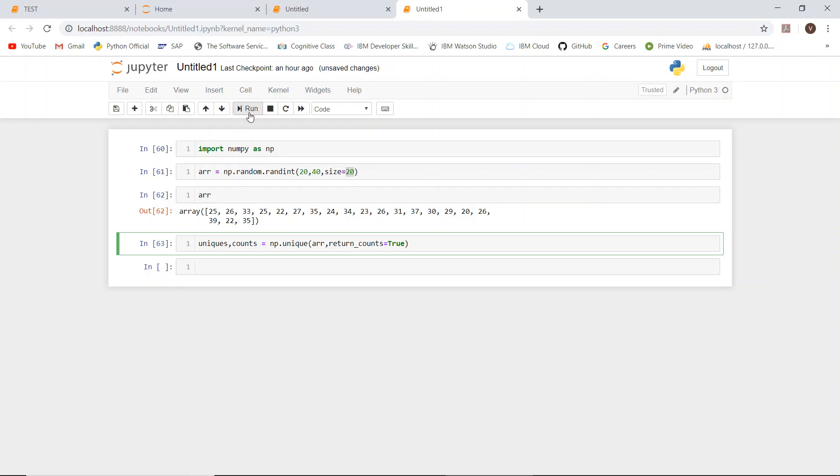This method will return something, so we'll assign it to variables: uniques, counts. I had run it by pressing Shift+Enter - that's another shortcut for clicking Run. Now let's see what this variable holds.